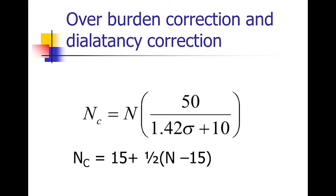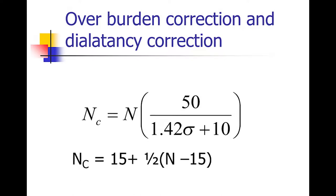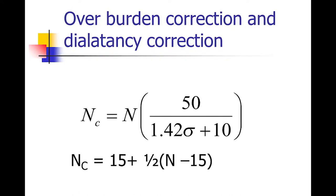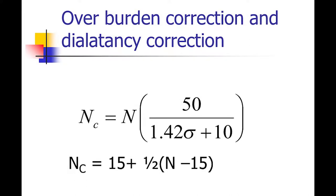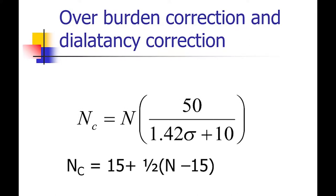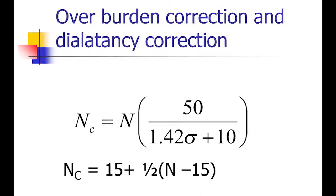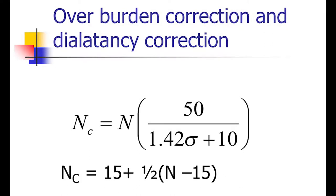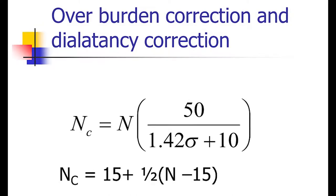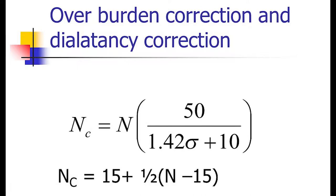For SPT corrections, N corrected = N actual × (50 / (1.42σ + 10)), or alternatively, N corrected = 15 + 0.5 × (N − 15) when the blow count is more than 15. Two corrections are applied: a dilatancy correction and an overburden correction. The corrected N value is then used for design.